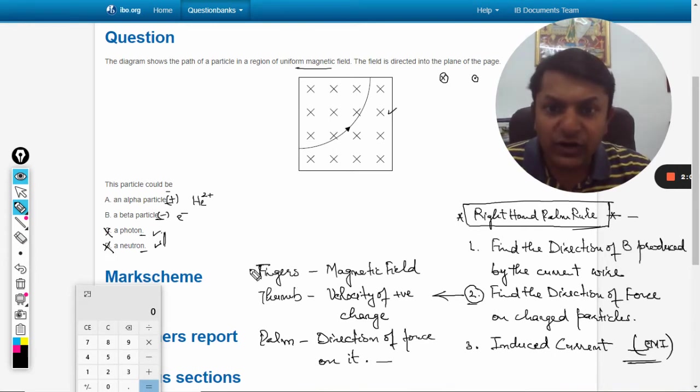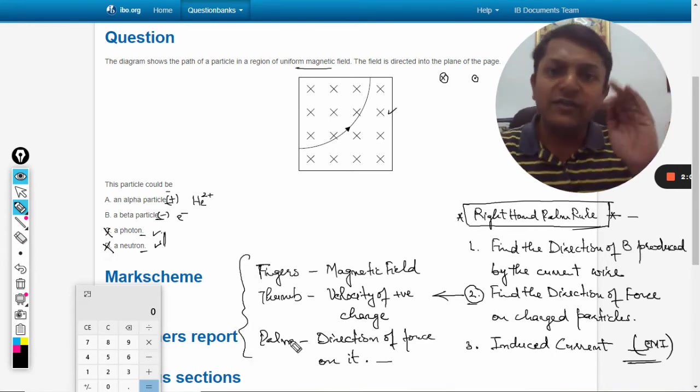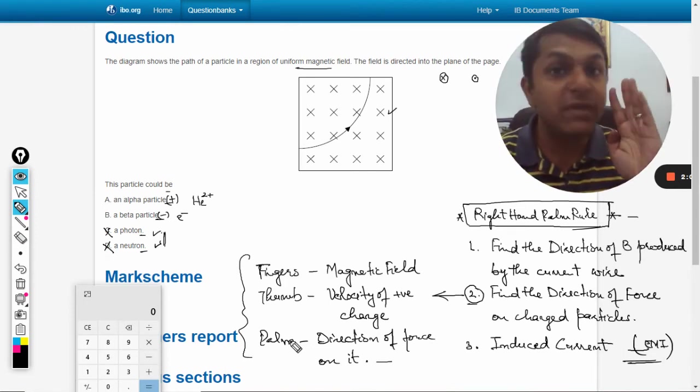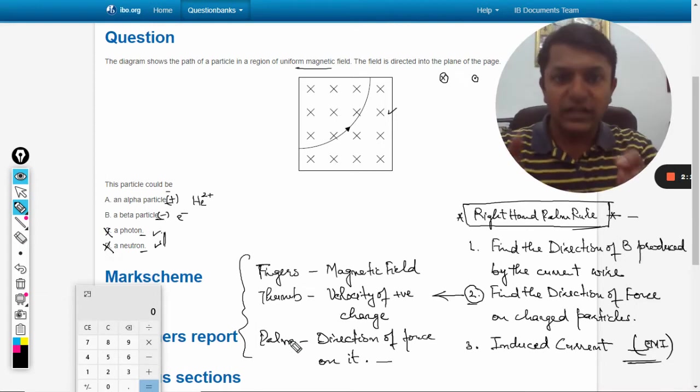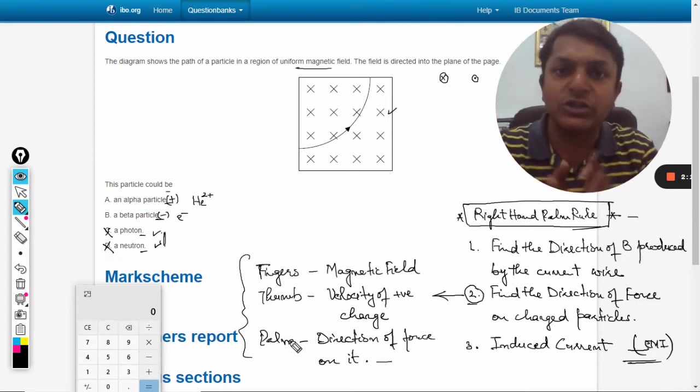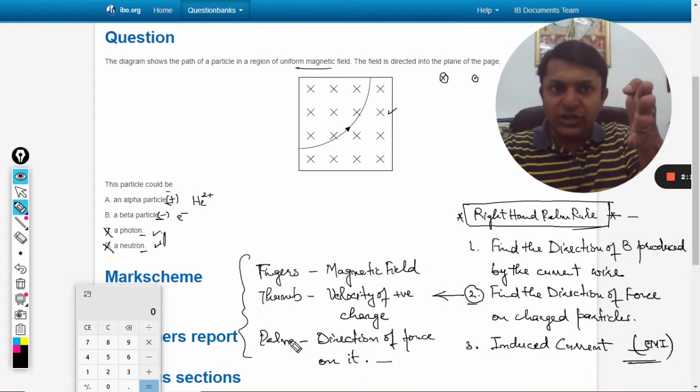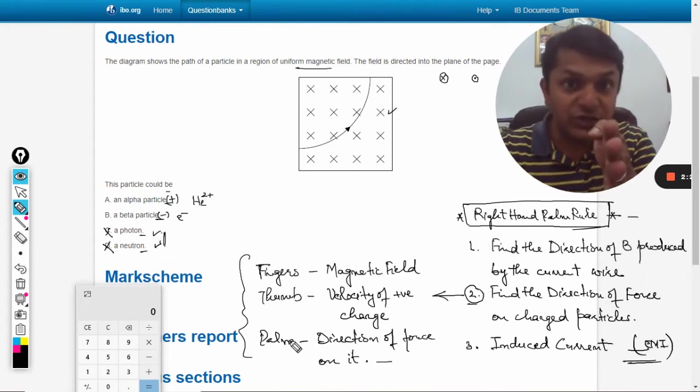What we do is use our right hand and point our fingers towards the magnetic field. I am pointing my fingers towards the screen because the magnetic field is going into the screen. The velocity of the particle is depicted by my thumb, and it is going towards the right hand side.